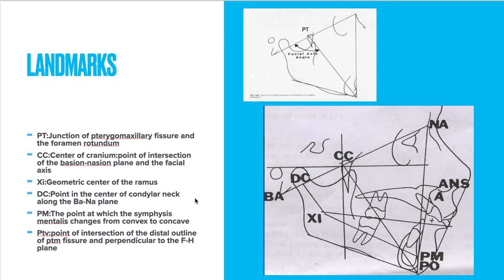The DC point is the center of the condylar neck along the Basion-Nasion line. The PM point is where the symphysis menti changes from convex to concave — approximately the center between B point and Pogonion. PTV, the pterygoid vertical, is the point of intersection of the distal outline of the PTM fissure and the perpendicular to the FH plane.